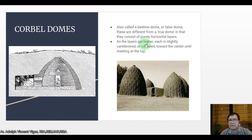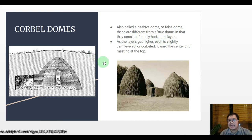Corbel domes, also called beehive domes or false domes, are different from a true dome in that they consist of purely horizontal layers. As the layers get higher, each is slightly cantilevered or corbeled toward the center until meeting at the top. This is how they are constructed.